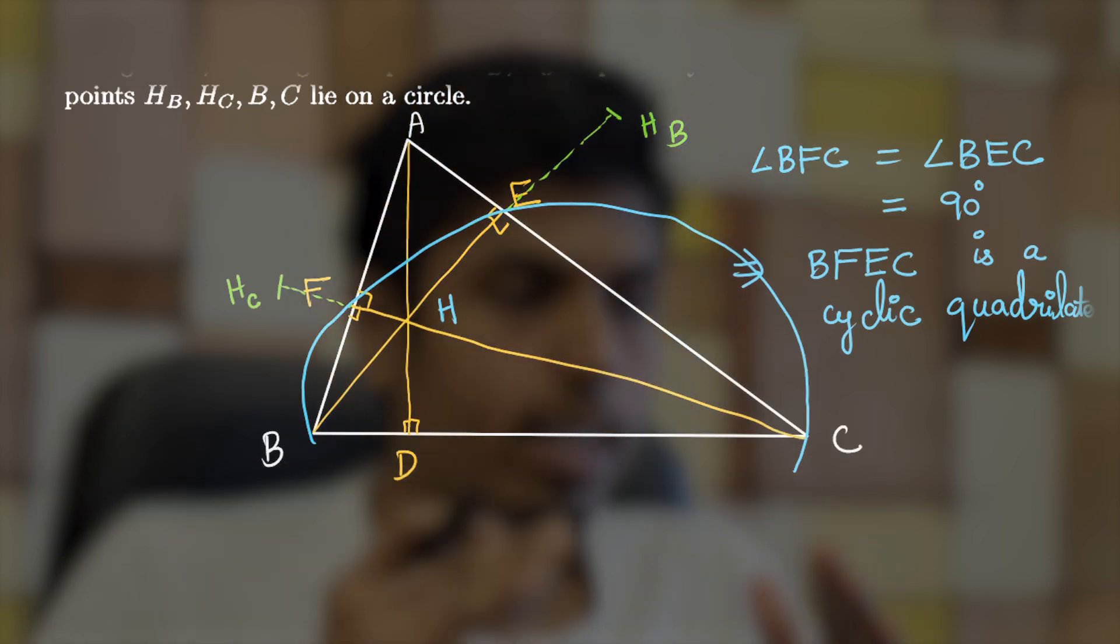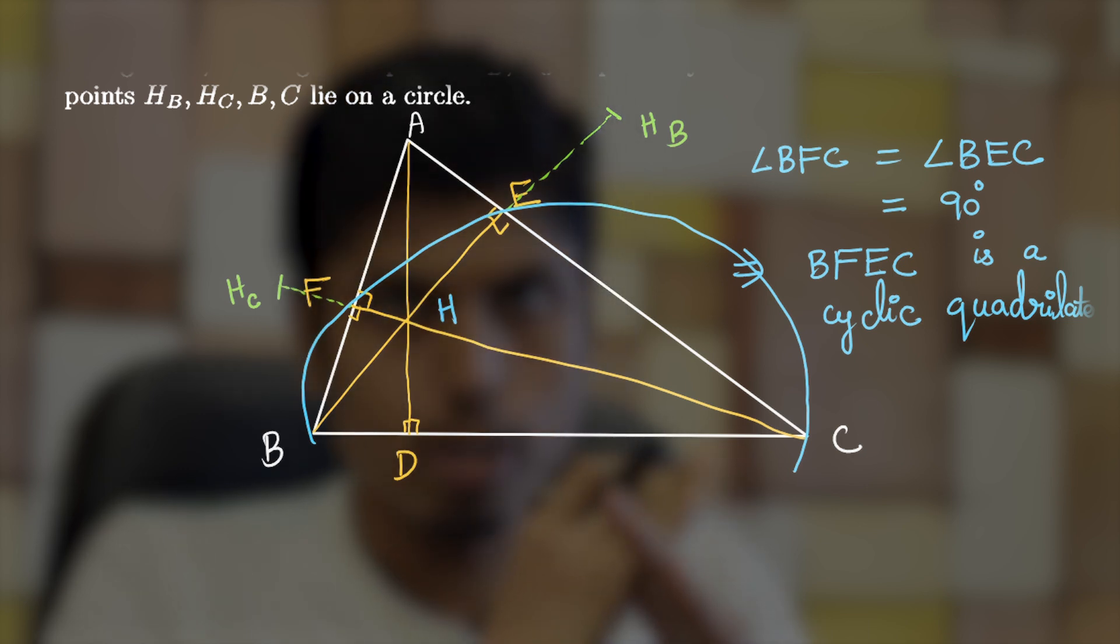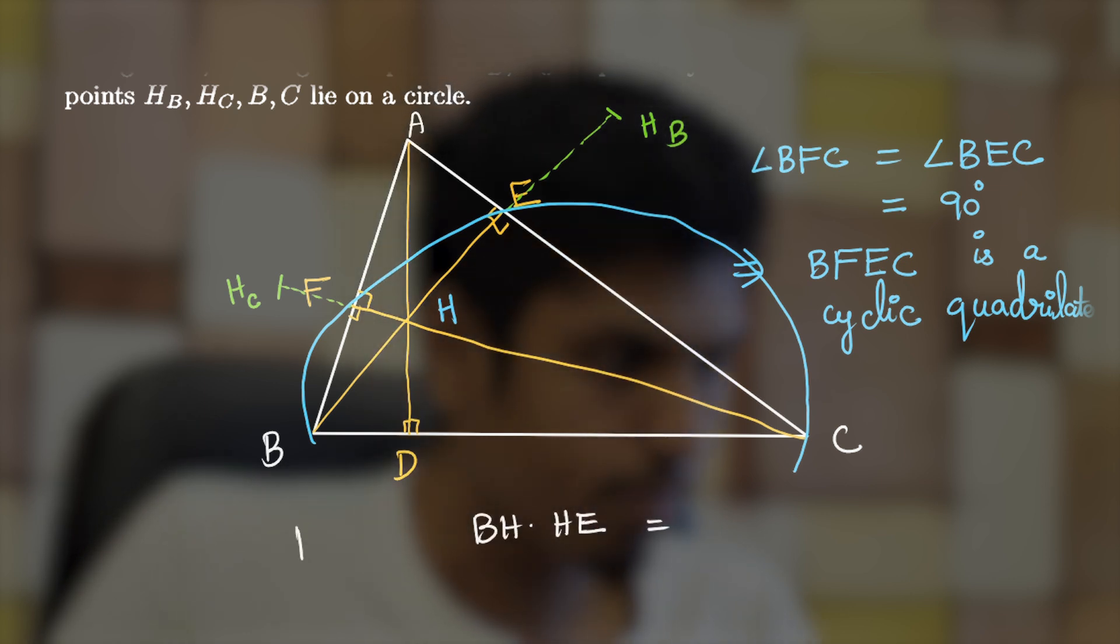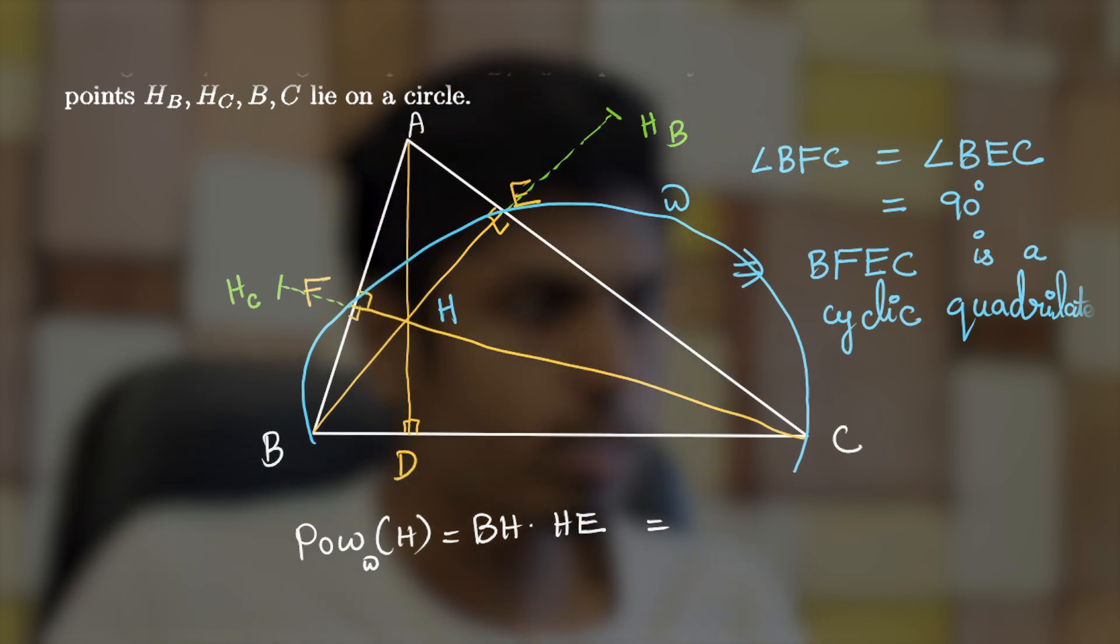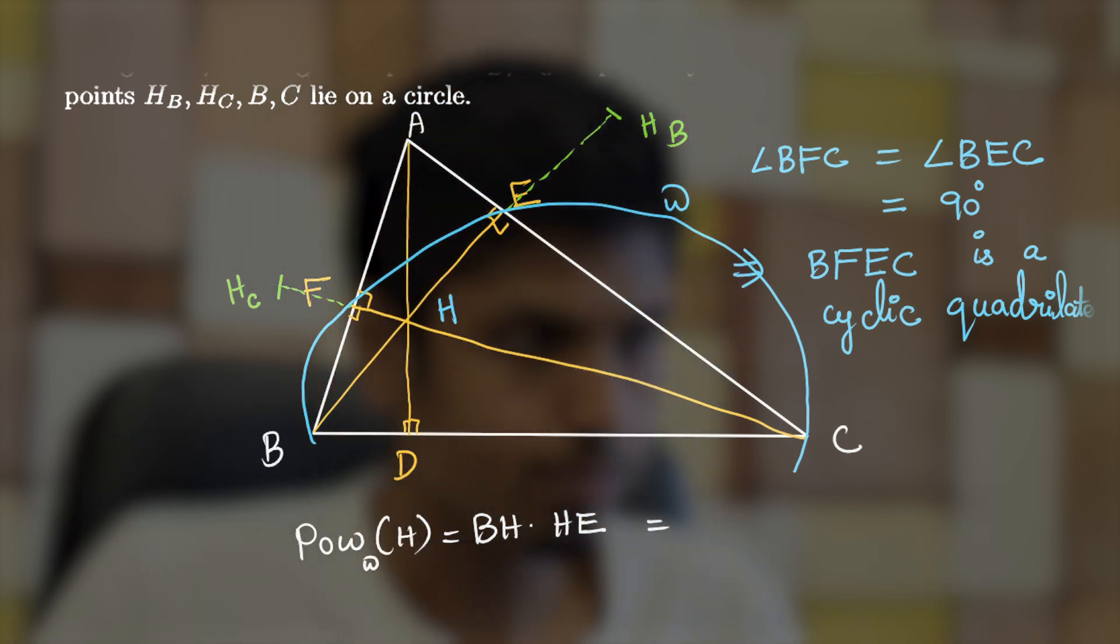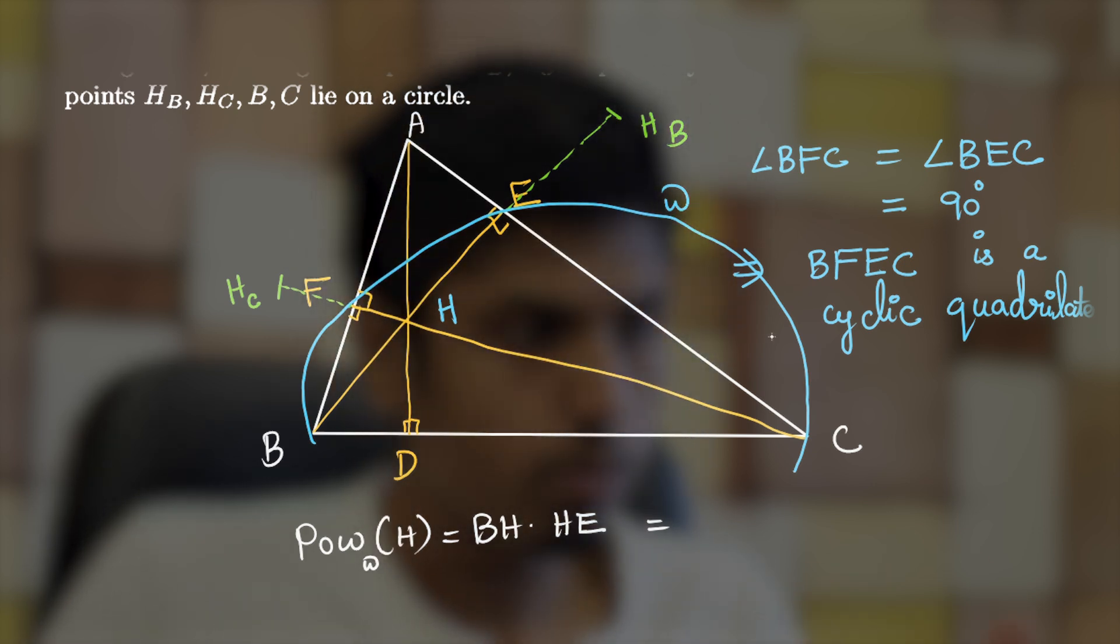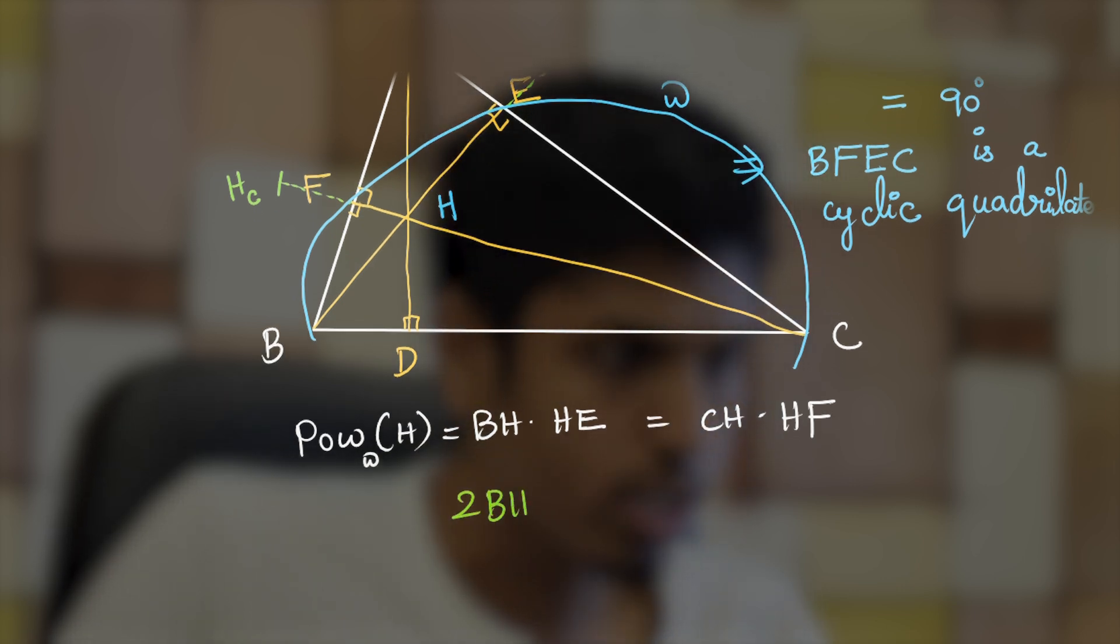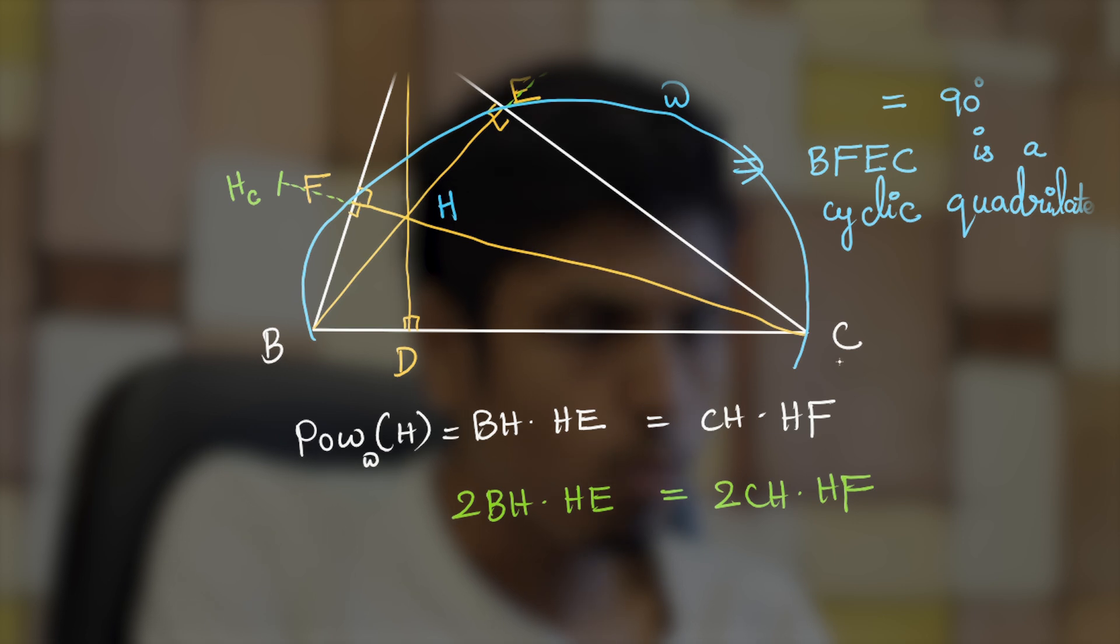What if these four points are concyclic? Notice that the line BE and the line CF both contain the point H. So why don't we apply the power of point theorem? The power of point when evaluated with the line BE would be BH times HE, and so this is the power of point H with respect to the circle omega, where omega is the circle circumscribing the cyclic quadrilateral BFEC. So BH times HE would be the power, which is equal to CH times HF. Beautiful. Let's multiply both sides. We get 2BH times HE equals 2CH times HF.